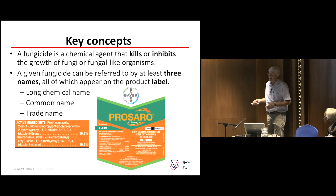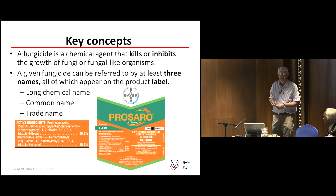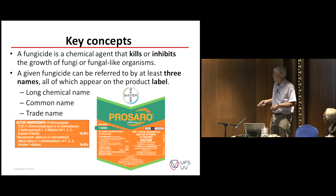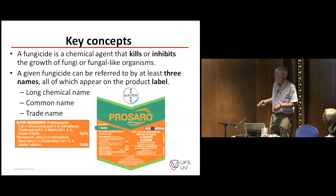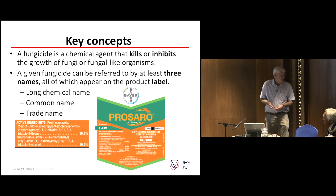The label is a legal document, and we could spend an entire lecture on its importance — there's a lot of information on there. In this particular case, we have two active ingredients: prothioconazole and tebuconazole. The active ingredient corresponds to the common name. This is also the product I sprayed in my yield loss experiment, which we discussed yesterday.